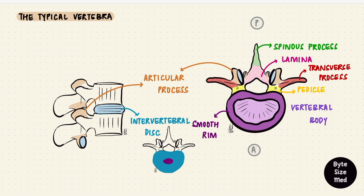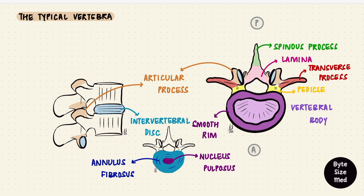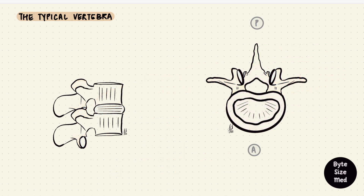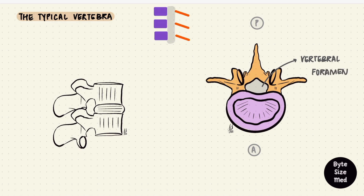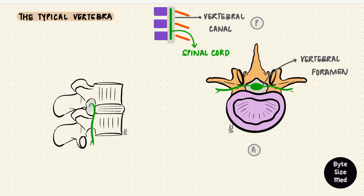Between the bodies of the vertebrae is an intervertebral joint with the intervertebral disc. The disc has concentric layers of fibrocartilage called the annulus fibrosis and a central gelatinous nucleus pulposus. Between the body and the arch is a space called the vertebral foramen. All these spaces line up, forming the vertebral canal, which contains the spinal cord. From that spinal cord, spinal nerves emerge and pass through the intervertebral foramen on the sides, formed by those articular processes.